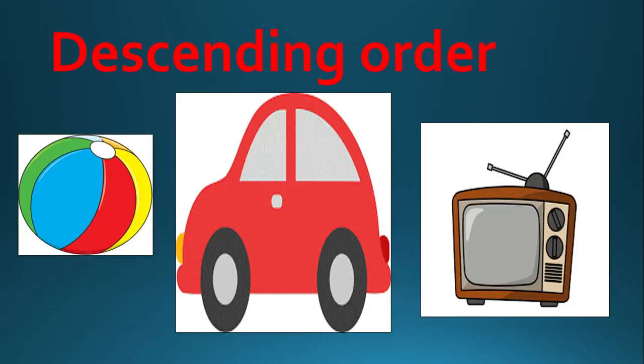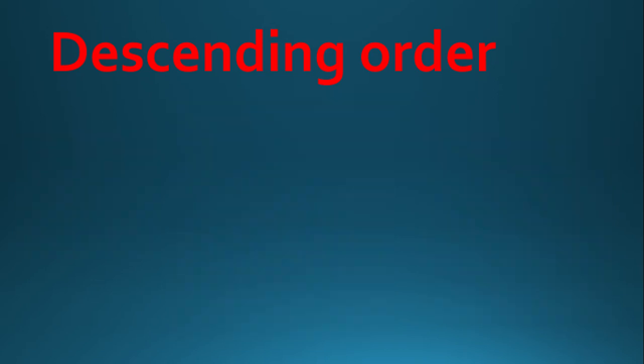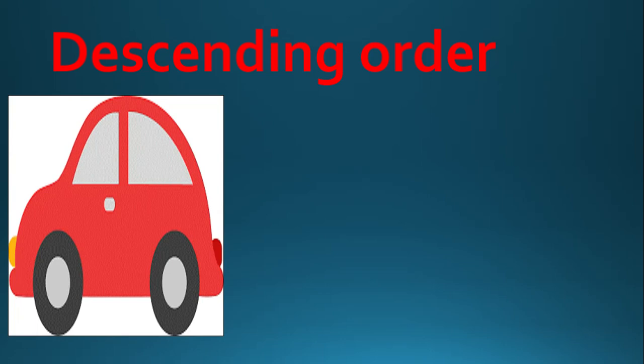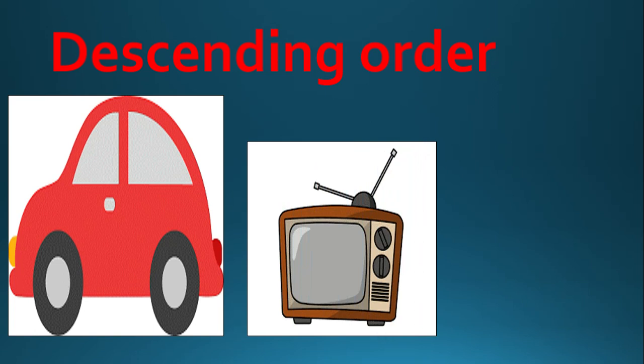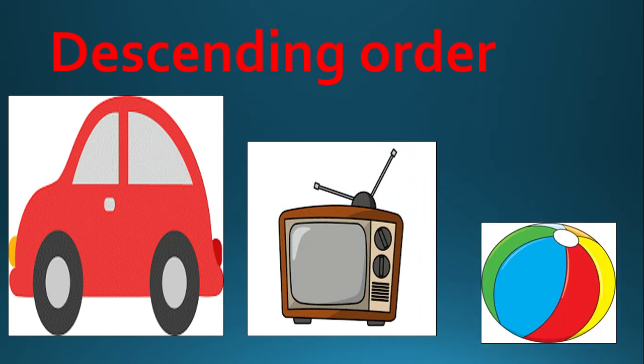Now let's arrange these objects in descending order. Can you tell me which object is the biggest? Car is the biggest object. Then TV. And then the ball — ball is the smallest object.